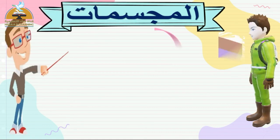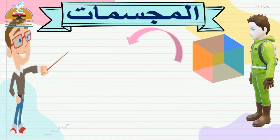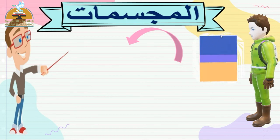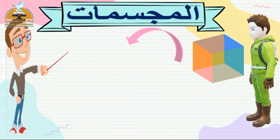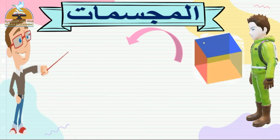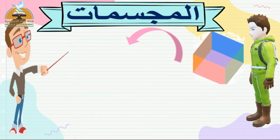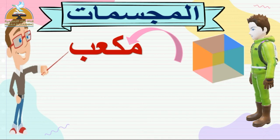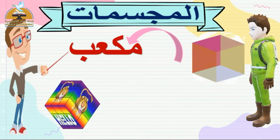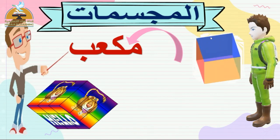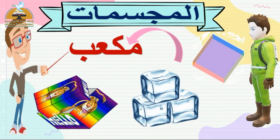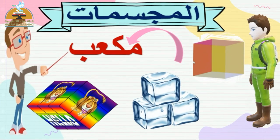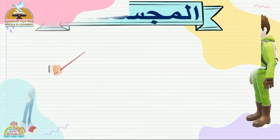ثاني مجسم: المكعب. المكعب مختلف عن متوازي المستطيلات. المكعب بيتكون من ستة أوجه، وكل وجه على شكل مربع. لو عدّيت الألوان الجميلة دي هتلاقيها ستة. يبقى المكعب بيتكون من ستة أوجه كل وجه مربع. أمثلة: زي المكعبات اللي ماما بتجيبها لنلعب بيها، وزي مكعبات الثلج.